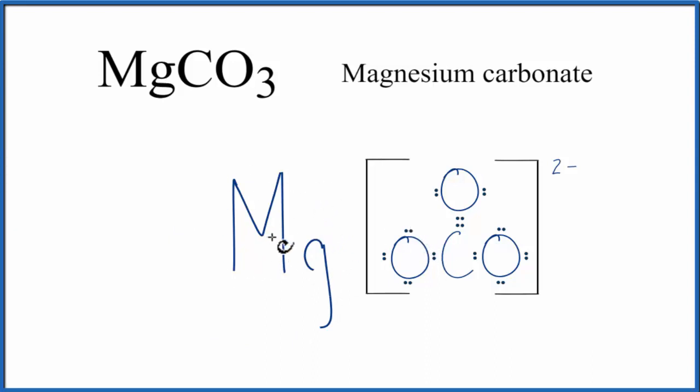When it does that, it's losing two valence electrons. Electrons are negative, so it loses those two negative charges, and it becomes 2+. The CO3, it gained those two electrons, so now it has a 2- charge.